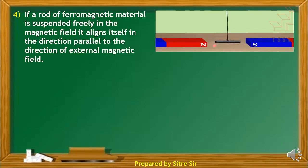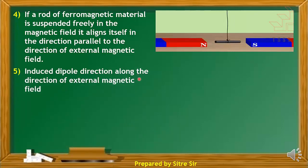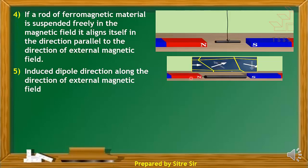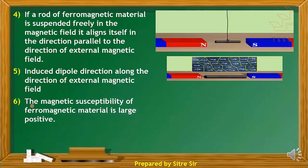The induced dipole direction is along the direction of the external magnetic field. Inside the ferromagnetic rod, the atoms' and molecules' dipole moment directions are initially random, but when an external magnetic field is applied, the dipole moments of atoms and molecules align along the magnetic field direction. The magnetic susceptibility of ferromagnetic material is large and positive.